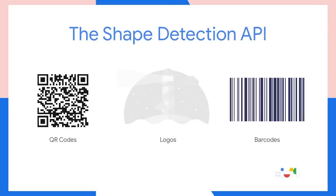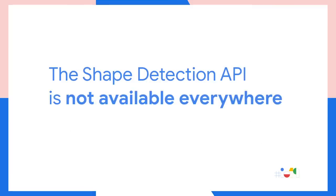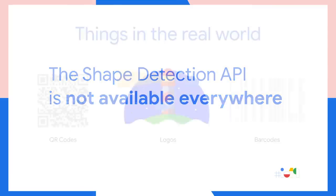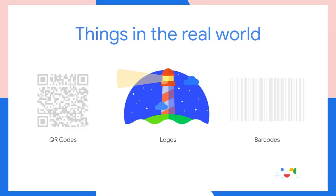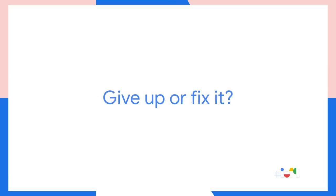For doing things like QR codes and barcode detection, we have the brand new web platform API, the Shape Detection API. And it's awesome, but it's not everywhere because it's a brand new API. And in terms of doing things like real-world logo scanning, there is no platform API for doing that either. Now, we've got two options here — we know it's a good idea. We could either give up, or we could try and fix it. And that's exactly what the Web Perception Toolkit is trying to do.